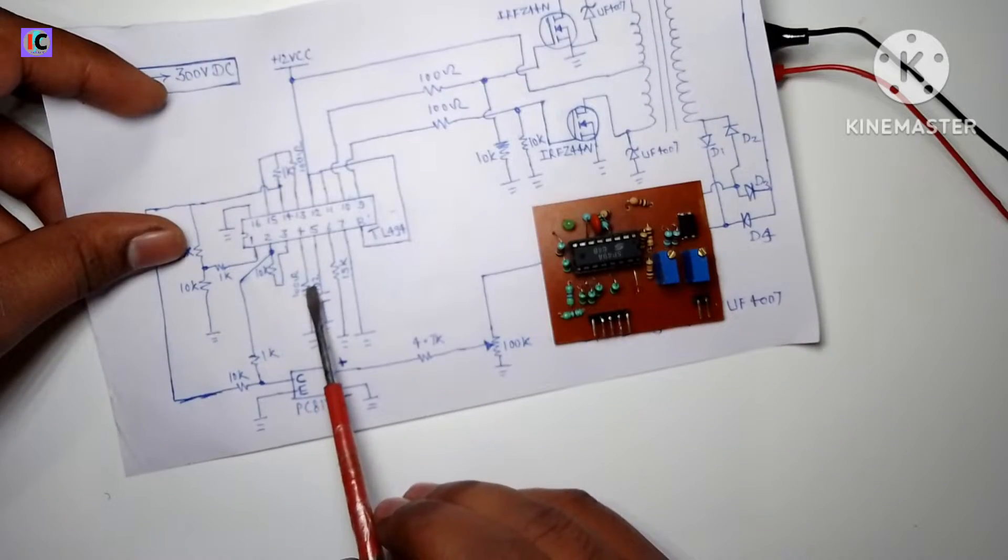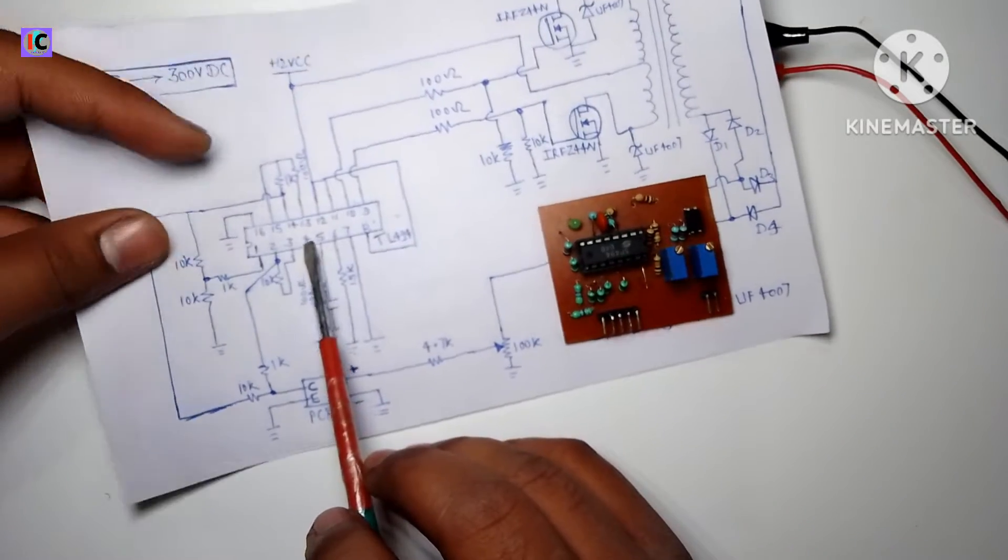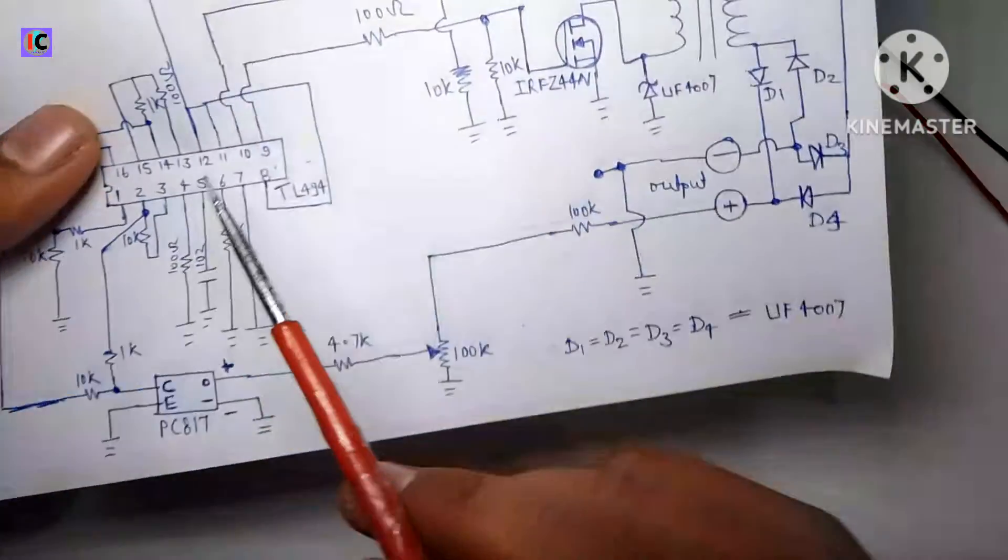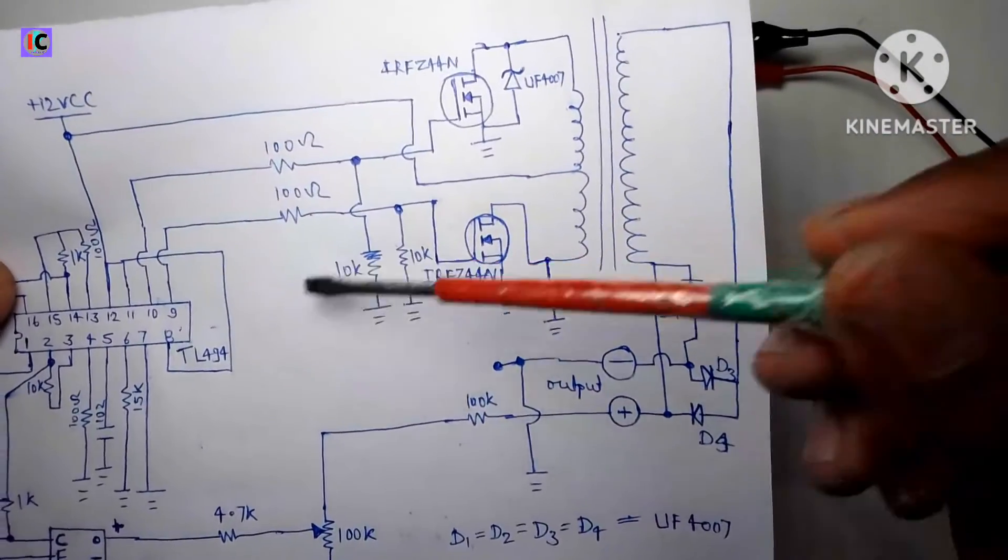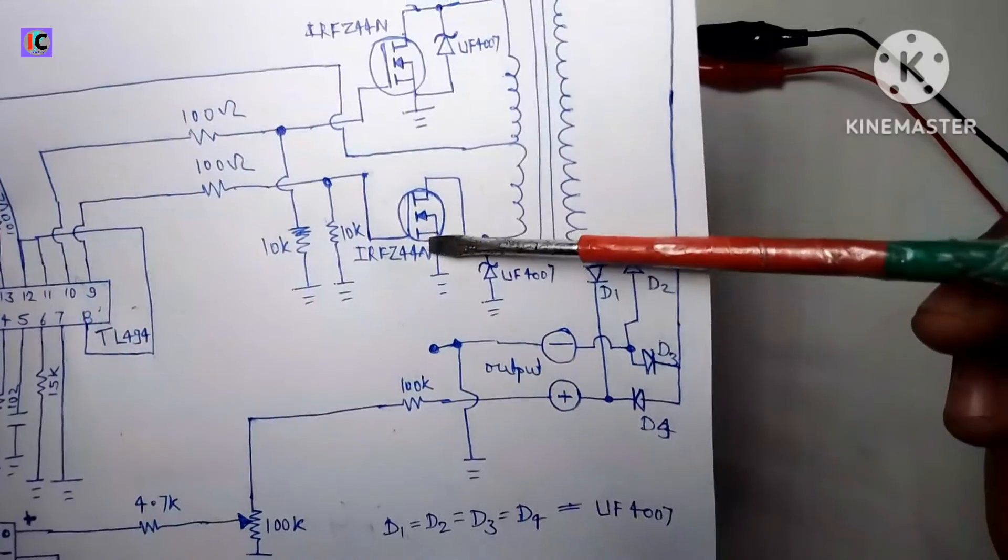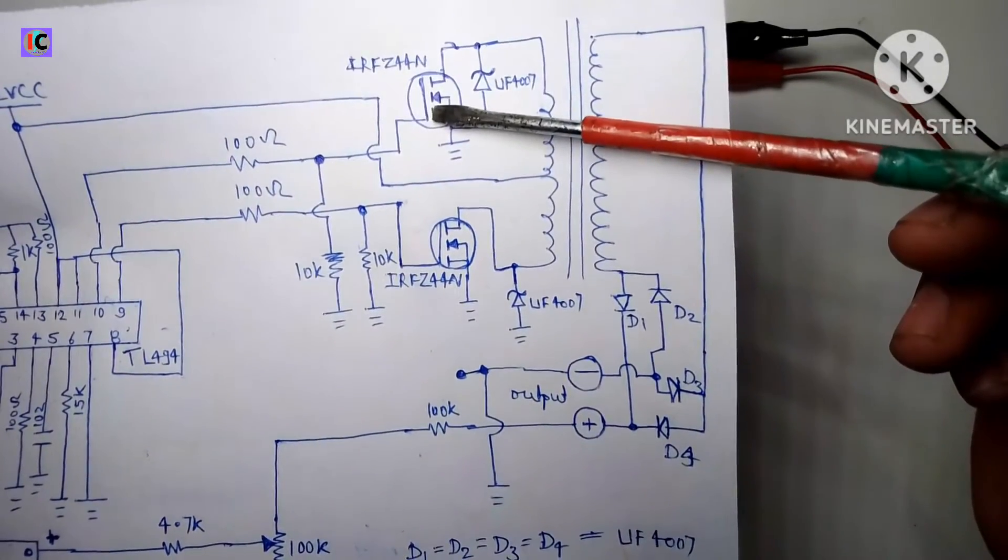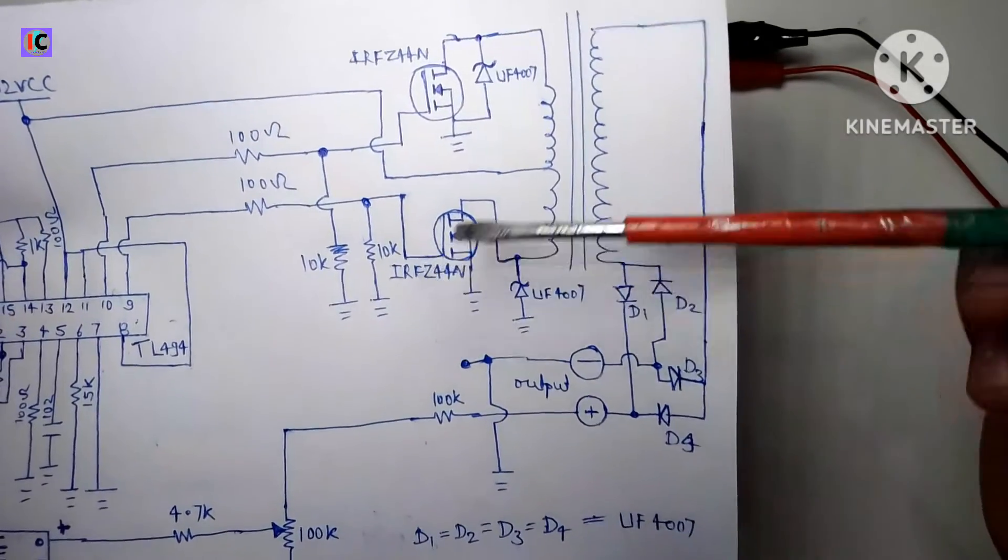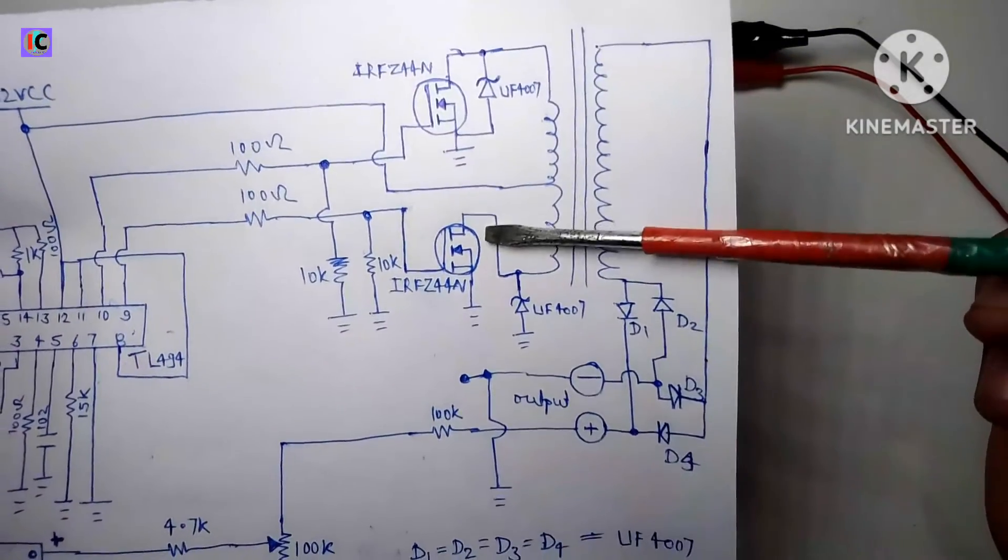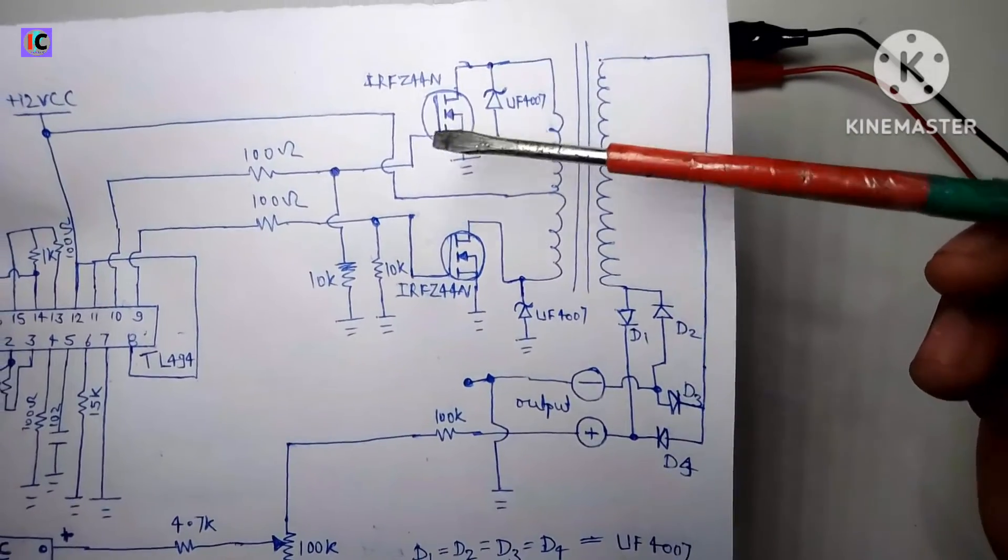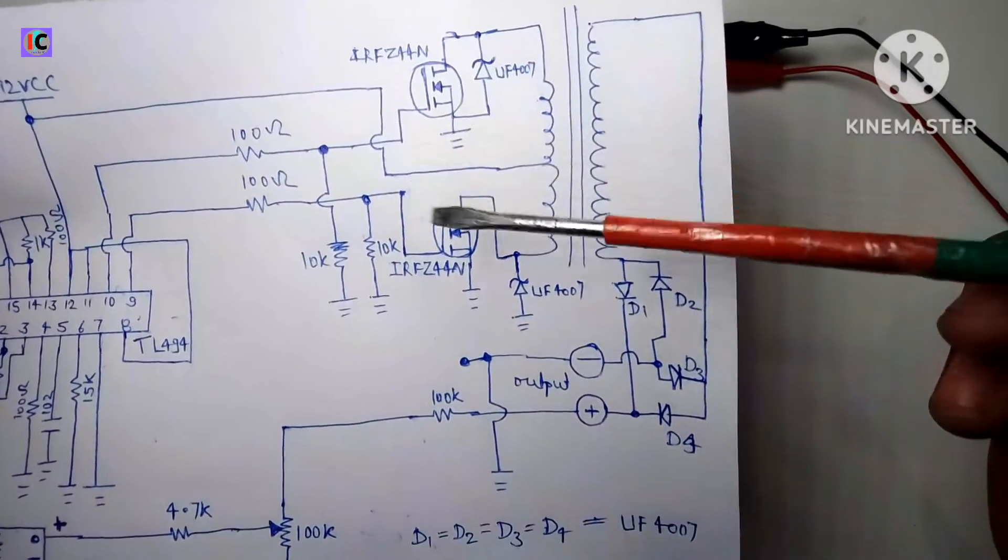10k ohm resistor is connected to the dead time control pin which is pin number four, so that we control the timing of the switching of these both MOSFETs and when the MOSFET is turned on and off. Because this is in the configuration of push-pull, in the first time one MOSFET is on and the second time